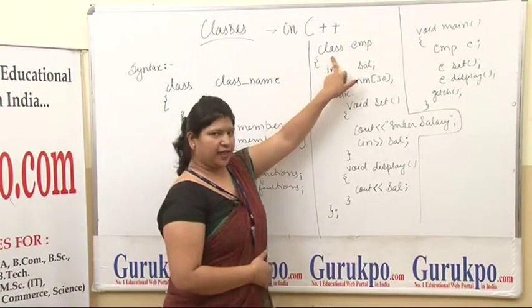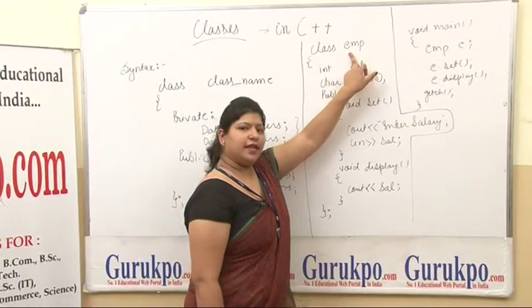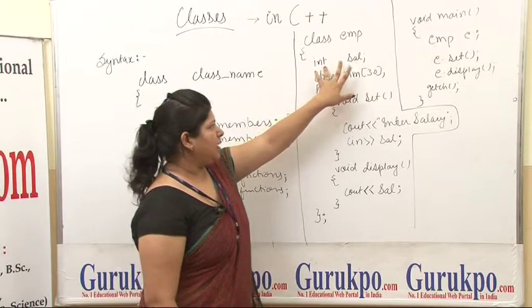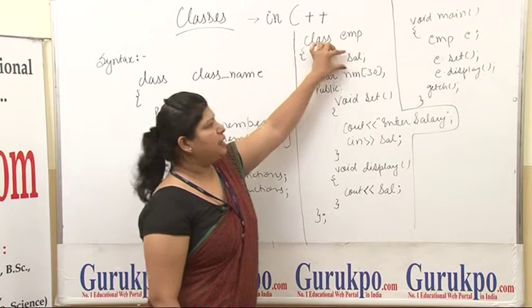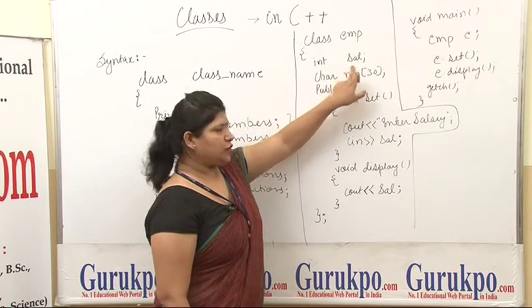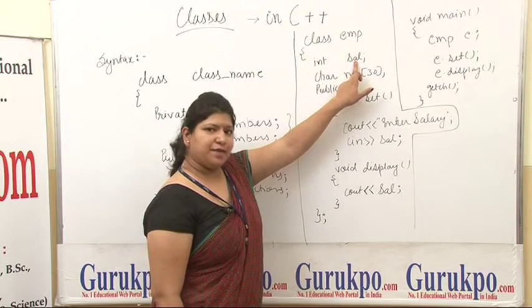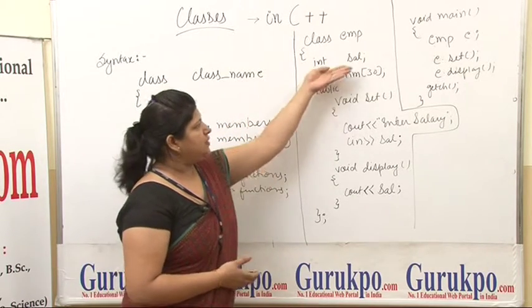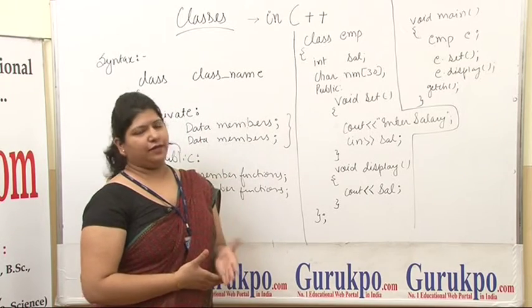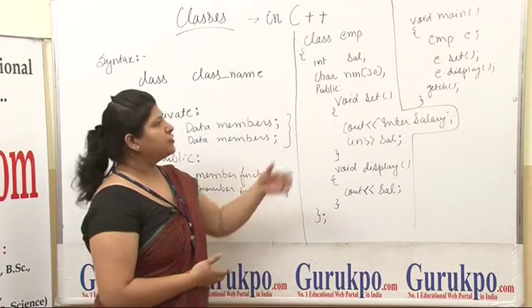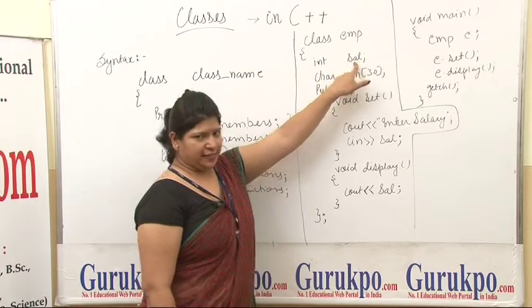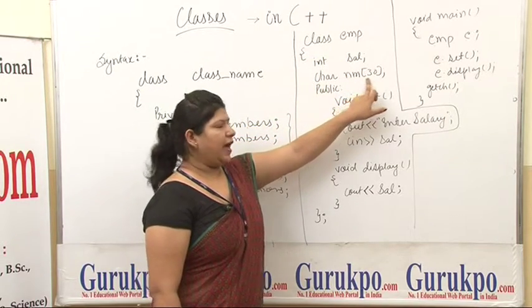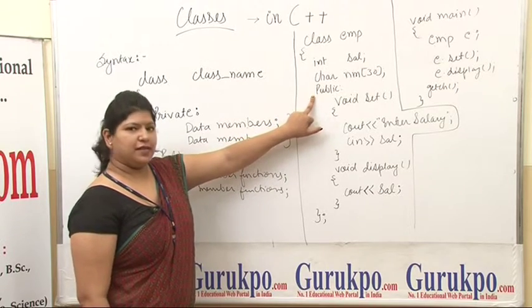In the example, we have the keyword 'class' followed by the class name 'emp', then the opening curly brace. We declare 'int sal' — this is a data member, not just a variable. Since no scope is specified, by default it becomes private. We also have a character array 'nm' of size 30. The next scope specified is 'public'.